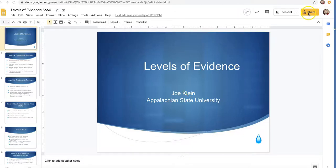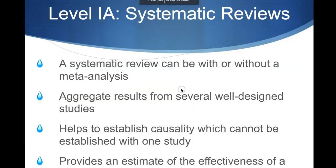All right, everybody, let's talk a little bit about levels of evidence today. So we've got four levels. If you had the research class for undergrad here at Appalachian, you probably had this — it's going to sound a little familiar. Don't worry about the A's and B's, just worry about level 1, level 2, level 3, level 4.